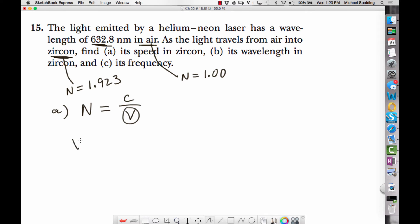We're looking for V, so V is going to be C over N. C is a constant, it's the speed of light in a vacuum, 3 times 10 to the 8th meters per second. This is going to be index of refraction for zircon, 1.923, and we get a velocity of 1.56 times 10 to the 8th meters per second.